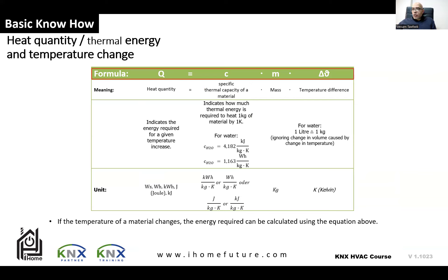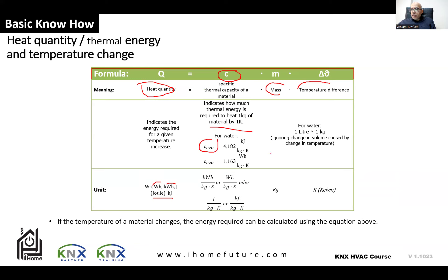The governing equation is: heat quantity Q equals C multiplied by mass multiplied by the temperature difference (delta theta). C is the specific thermal capacity of the material — a fixed value found in tables — indicating how much thermal energy a material can store. It represents the energy required to heat one kilogram of material by one degree. Heat is calculated in watt-second, watt-hour, kilowatt-hour, or joule.